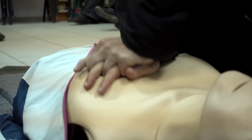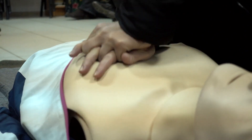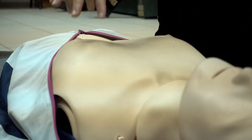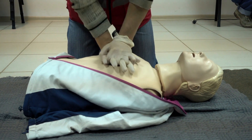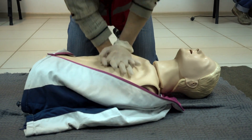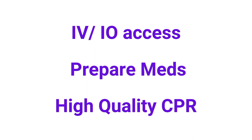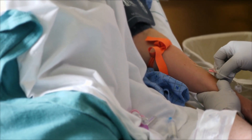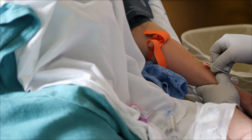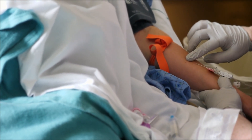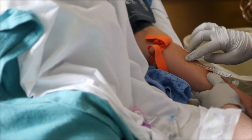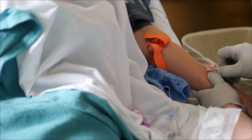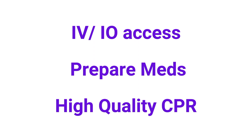Keep in mind that during single-rescuer CPR the compression-to-ventilation ratio is 30 to 2, and for two or more rescuers it's 15 to 2. Get IV or IO access. If neither IV nor IO access is available for medication delivery, the endotracheal or ET route is the third option. The typical ET dose will be 2 to 3 times that of the IV dose.